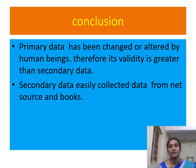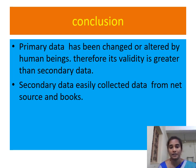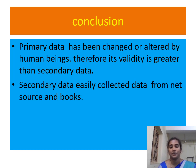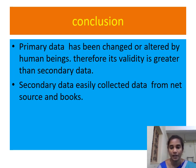In conclusion, primary data can be changed or altered according to the information or data we have, and therefore it has greater validity compared to secondary data. Secondary data, on the other hand, can be easily collected from sources such as the internet, books, and other resources. Thank you.